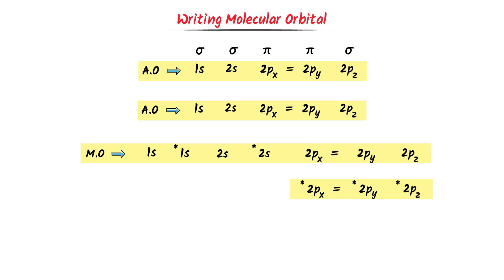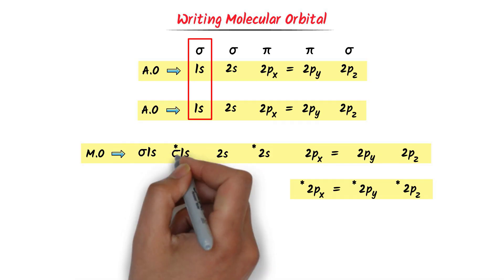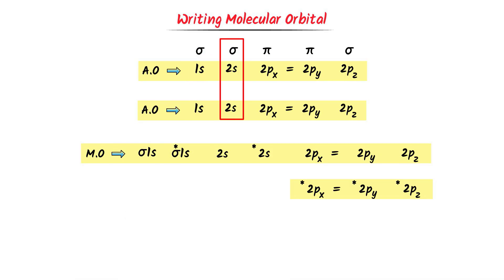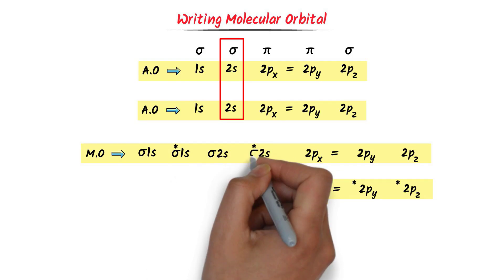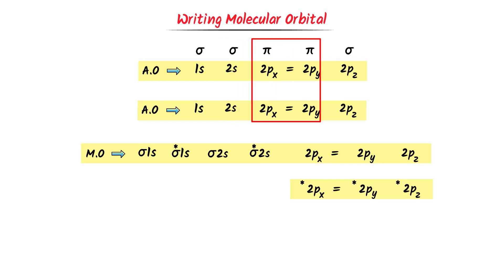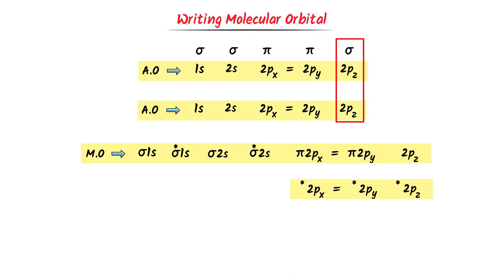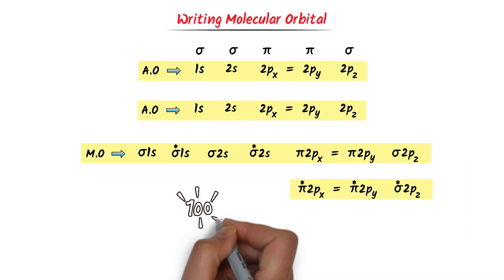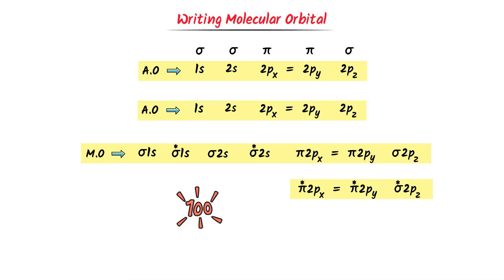Now listen carefully. 1s forms a sigma bond, so I put sigma with bonding and anti-bonding 1s. 2s forms a sigma bond, so I put sigma with both 2s MOs. 2px and 2py form pi bonds, so I put pi with them. 2pz forms a sigma bond, so I put sigma with those. This is the most easy way to write molecular orbitals.